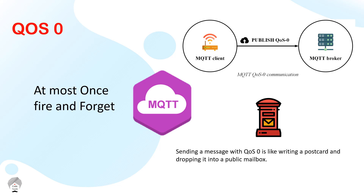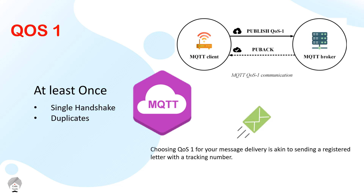This is what we call QoS 0 — fire and forget. In QoS 1, it's 'at least once.' This is called the single handshake method, but it can result in a lot of duplicates. The client sends a message to the broker and the broker acknowledges back saying it received the message. If the broker hasn't received the message, the client keeps sending the message over and over again, which means there is a high chance of having duplicate messages sent across.